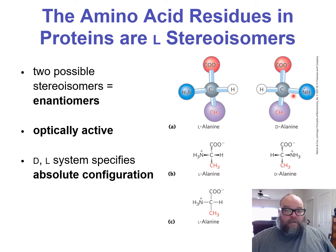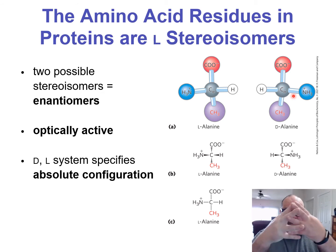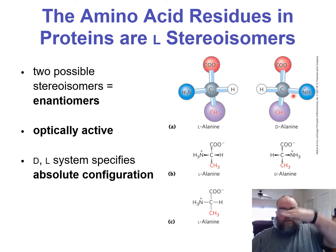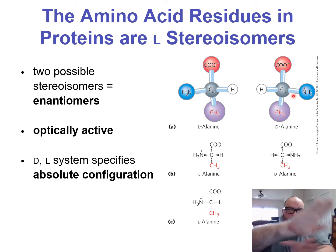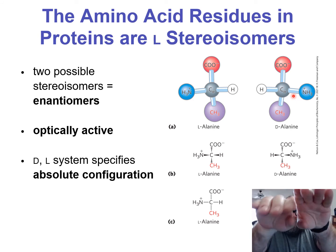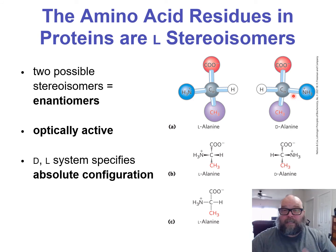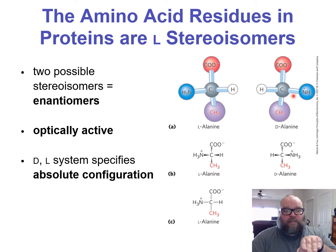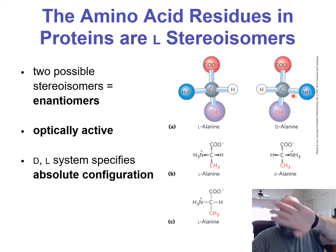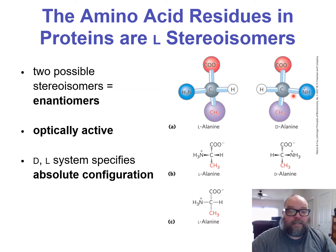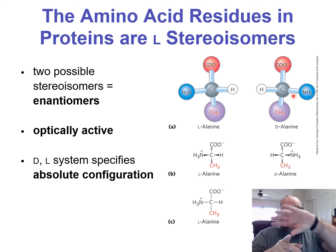L-alanine, D-alanine — they are optically active, which means that if you were to bombard them with polarized light — polarized light means all the photons come in one direction only — you bombard L-alanine and D-alanine with this polarized light in a vacuum chamber. Once it hits these molecules, it will cause what was vertical to now rotate counterclockwise or clockwise. L-alanine rotates counter, D-alanine rotates clockwise.